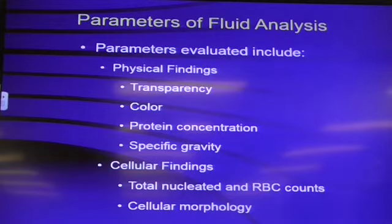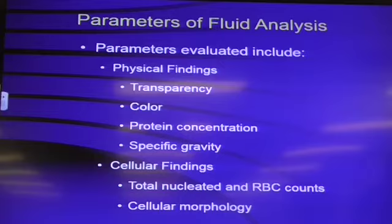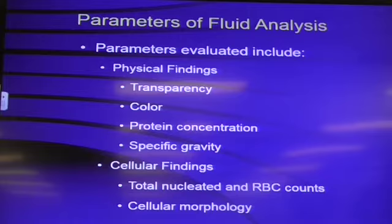Then we spin it down, look at the sediment, and look for our total nucleated cells and blood cells in there. Also look at the cell morphology. Why are we looking at the cell morphology? What if it's a neoplasm? How are you going to figure that out? You've got to look at it. You've got to use that thing you call a microscope. A lot of us forget about those things.